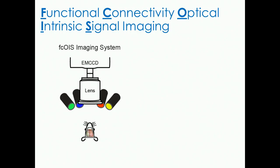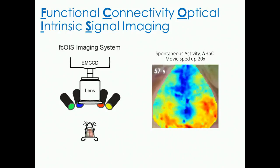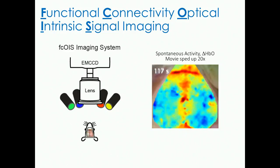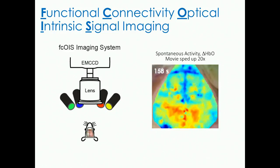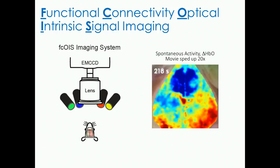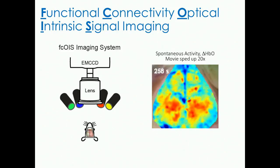What we've been developing is a functional connectivity optical intrinsic signal imaging method. It's a rather simple system — just a few LEDs that illuminate the intact skull. The scalp is removed but the skull is left completely intact, and changes in diffuse reflected light are detected by the camera. We take advantage of the absorption coefficients of hemoglobin to unmix their contribution to our absorption signal. We anesthetize a mouse with ketamine, and you're measuring spontaneous activity at very slow frequencies, less than a tenth of a hertz.